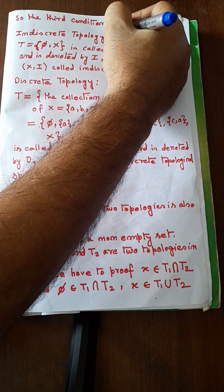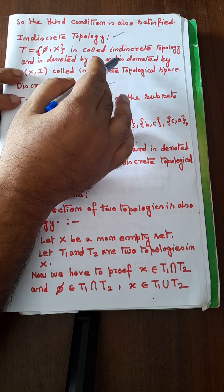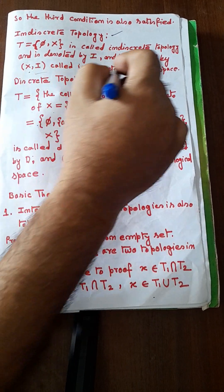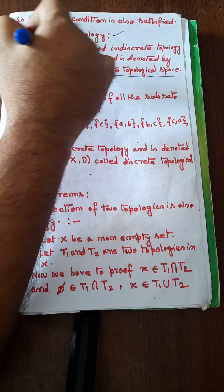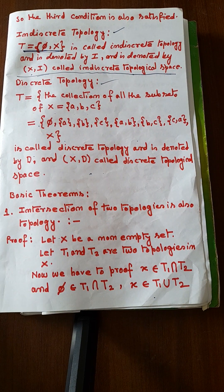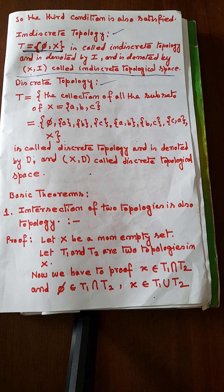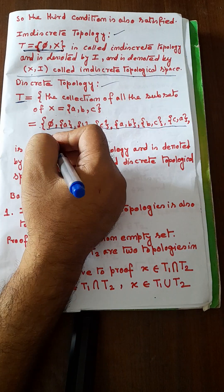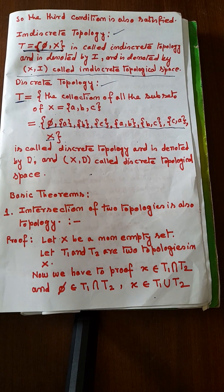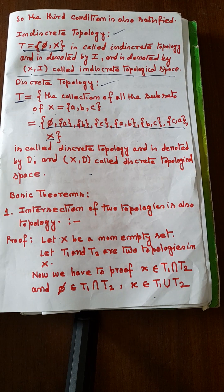There are two kinds of topology. One is indiscrete topology and the other is discrete topology. T = {φ, X} is called the indiscrete topology, denoted by I, and (X, I) is called the indiscrete topological space. So if a topology contains only the empty set and the whole set X, it is the indiscrete topology. Discrete topology is the collection of all subsets of X — all subsets are present along with X and φ.